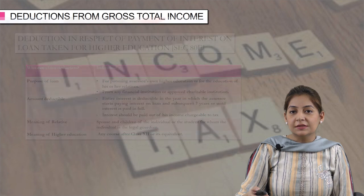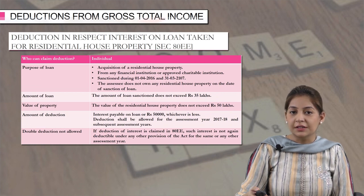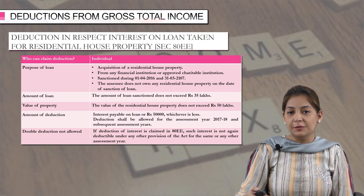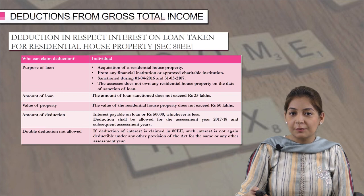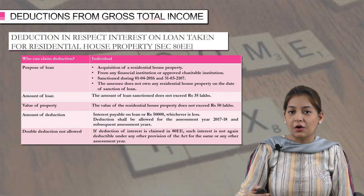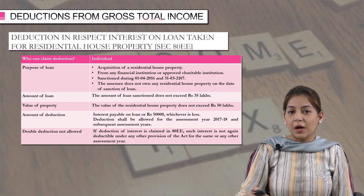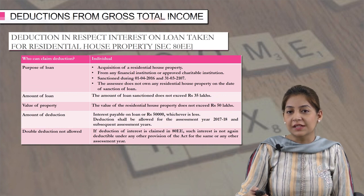The next section is 80EE. This section is in respect of interest on loan taken for residential house property. Again, the deduction can be claimed by an individual. If an individual has acquired a residential house property and has taken a loan from any financial institution or approved charitable institution during the period 1st April 2016 to 31st March 2017, he can claim the deduction of that interest under section 80EE, provided he does not own any other residential house property on the date on which he has taken the loan.